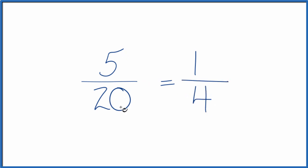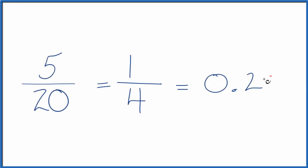So 5/20, an equivalent fraction, would be 1/4. And if you divide 5 by 20 or 1 by 4, you get 0.25. Same thing for both of these because they're equivalent.